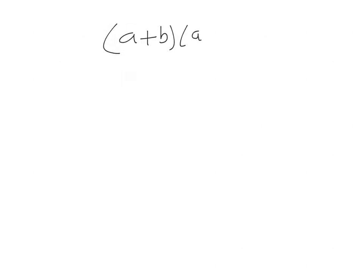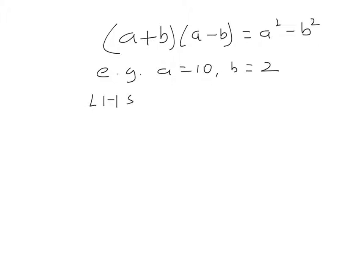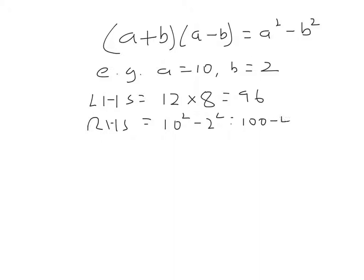Here's a proof that if you take two numbers and add them, and take the same two numbers and subtract them, it's the same as squaring one and squaring the other. For example, a equals 10, b equals 2. The left hand side is 10 plus 2, multiplied by 10 minus 2, that's 96. And the right hand side is 10 squared, that's 100, minus 2 squared, that's 4, which is 96. Now, this is not how you prove things — an example is not enough to prove something.